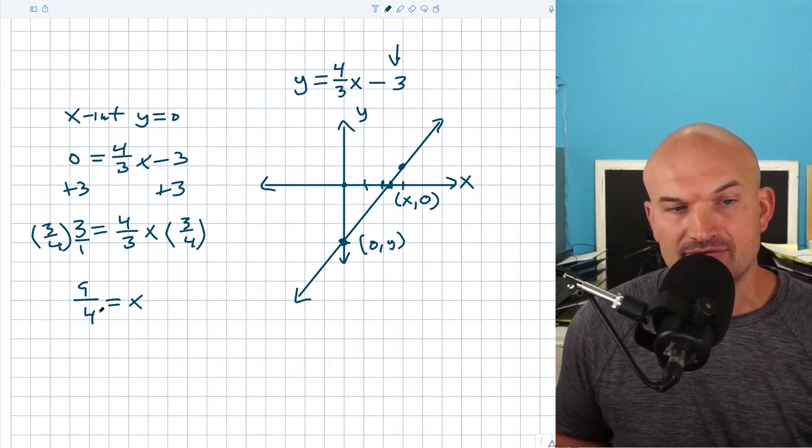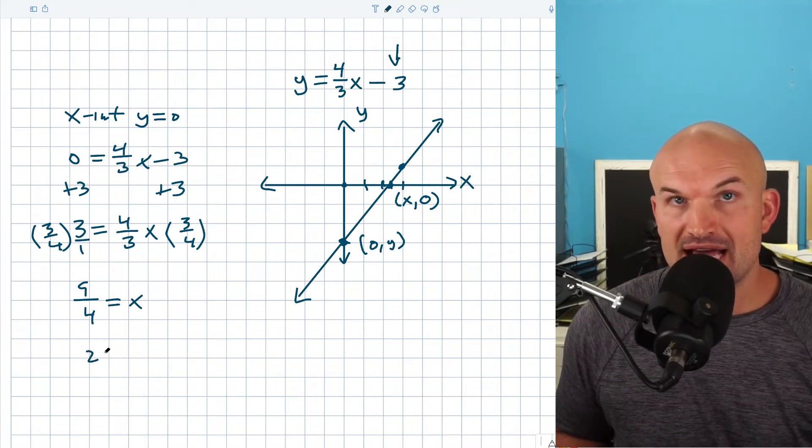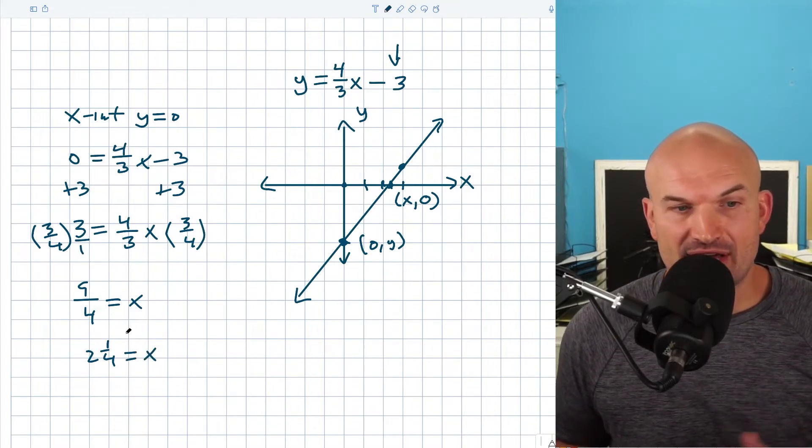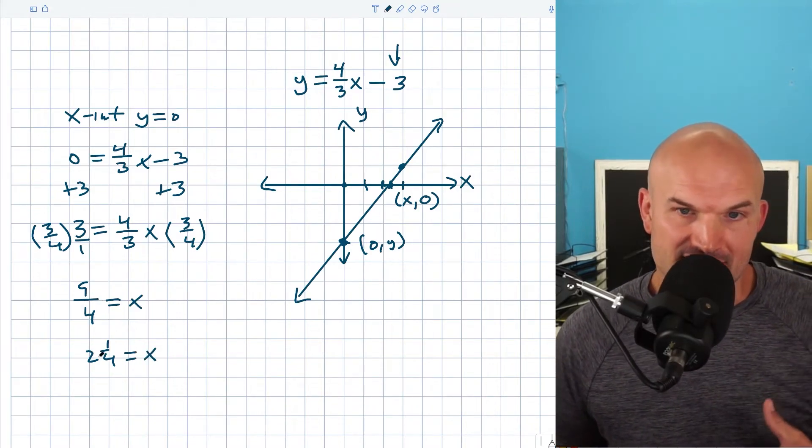So if I was to rewrite this as a mixed number, four goes into nine how many times? Two times, right? With the remainder of one. So that's going to be two and one-fourth is equal to x. So basically exact same value. This is just written as an improper fraction. This is a mixed number.